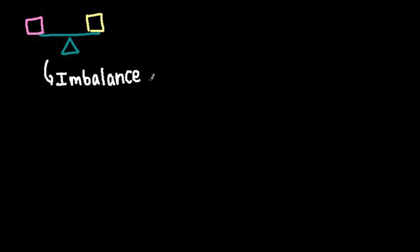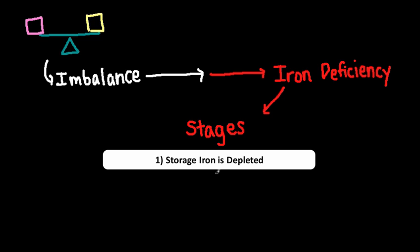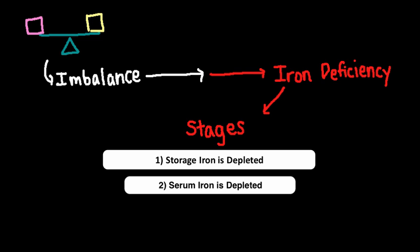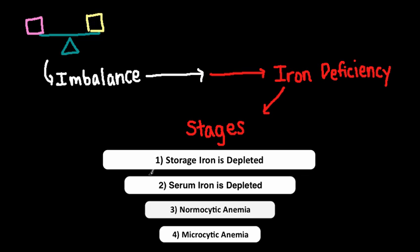If any imbalance progresses, iron deficiency will persist and stores in the body will begin to be depleted in stages. First, storage iron is depleted — the iron bound to ferritin within macrophages will be used up first. Then, serum iron will be depleted. In the third stage, a patient will develop a normocytic anemia; the bone marrow with less iron will make fewer red blood cells but still try to maintain their normal size. Finally, in the last and most severe stage, we get a microcytic anemia — the bone marrow makes small and fewer red blood cells.